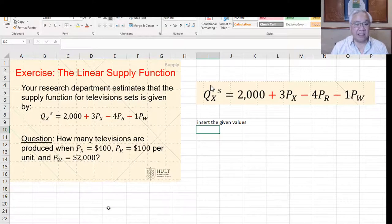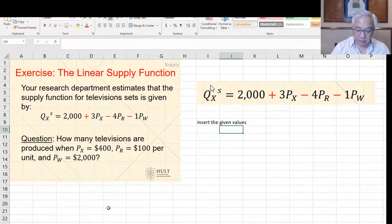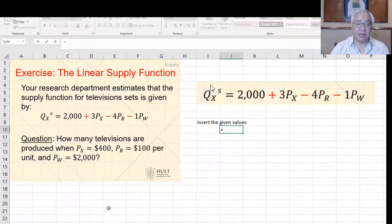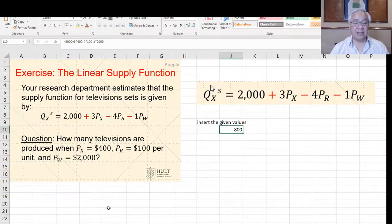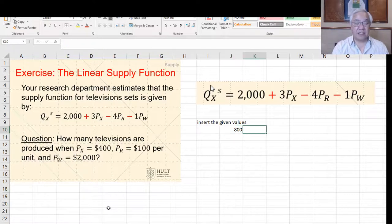Here we go back to Excel and see the supply function. This is quite simple, and we just have to input the variables. It equals 2000 plus three times PX, which is 400, minus four times PR, which is 100, minus one times PW, which is 2000. The result is 800, and that is the number of television sets.